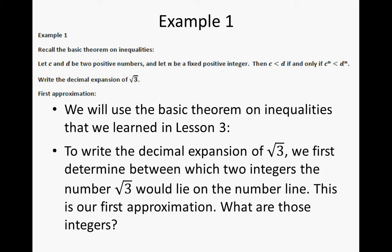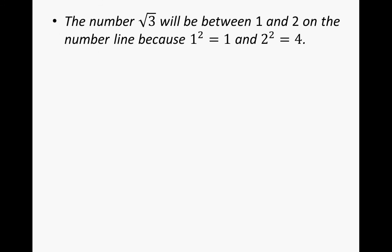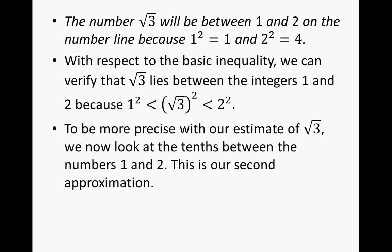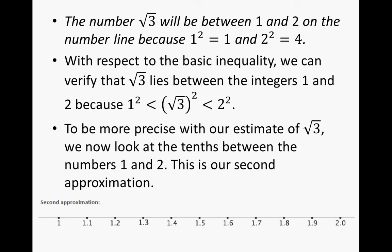What are those integers? The number square root of 3 will be between 1 and 2 on the number line, because 1 squared is 1 and 2 squared is 4. With respect to the basic inequality, we can verify that the square root of 3 lies between 1 and 2 because 1 squared is less than the square root of 3 squared, which is less than 2 squared. To be more precise, we now look at the tenths place between 1 and 2 — this is our second approximation. Here we have a number line partitioned into 10 equal parts between 1 and 2.